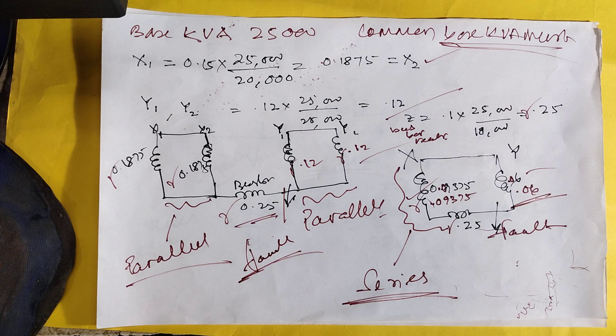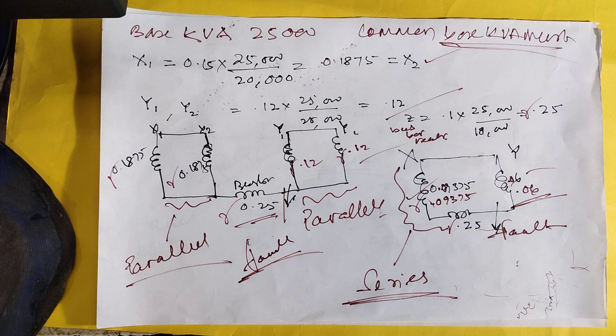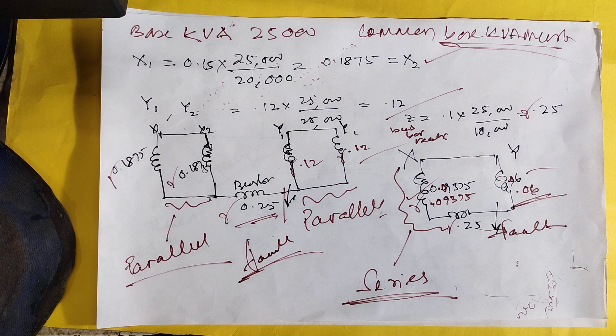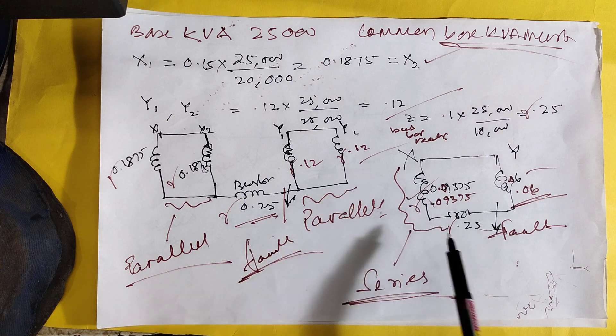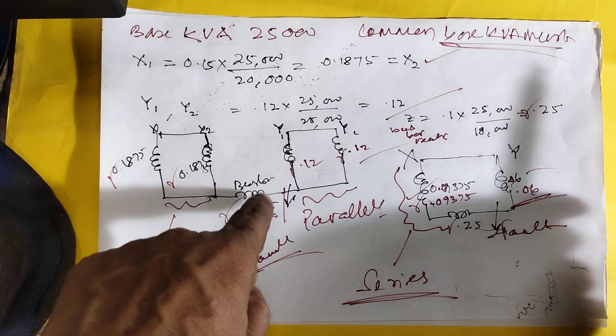So this X side, two are parallel. Y side, two are parallel. So parallel it will become 0.93. X side and Y side will become 0.6. And the bus bar reactor is 0.25. And you see these two parallel, these two parallel, but this in series. So make two parallel, it will become next page.